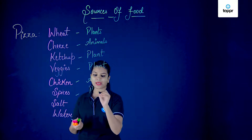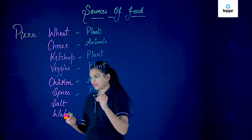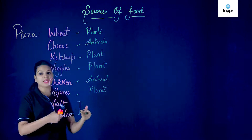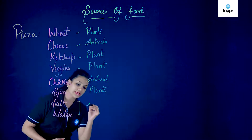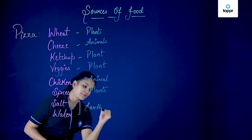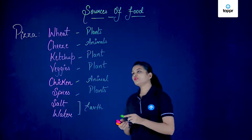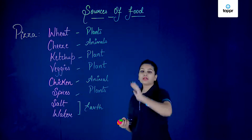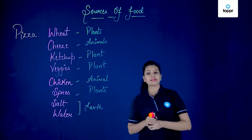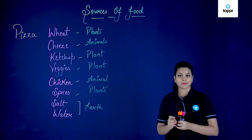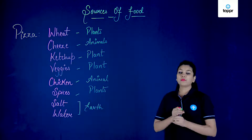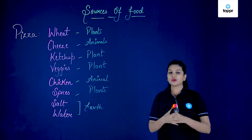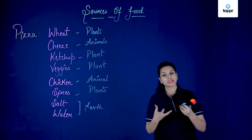Spices again we get from plants. Coming to salt and water — these two are not obtained primarily from any plant or animal; they are mainly products of our earth. But except for these two, you must have noticed that we mainly obtain our food items from plants or animals. So plants and animals act as the major source of our food. Plants perform photosynthesis to make their own food, so we can call them producers.